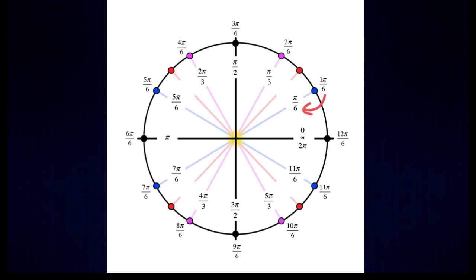One pi over six becomes pi over six. Two pi over six reduces to pi over three. Three pi over six reduces to pi over two. Four pi over six reduces to two pi over three. Five pi over six stays the same. Six pi over six reduces to pi.